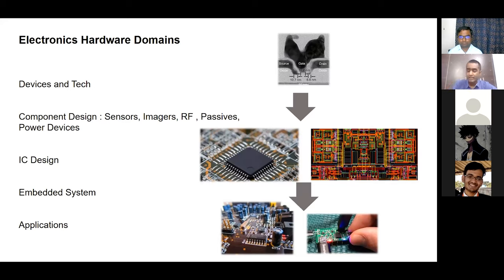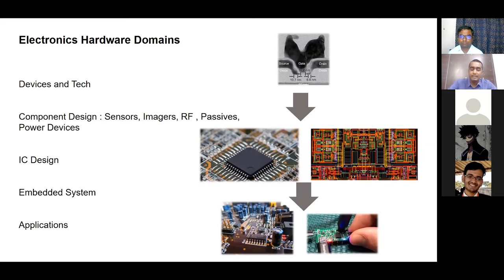An embedded system should have a processor for processing data, a sensor for acquiring data, and memory for storing data. There is a complete domain dealing with designing and programming these embedded systems so that they can perform a desired function. Whatever applications we have — mobile phones, computers, or other electronic gadgets — behind each there is this kind of embedded system with a PCB having all the electronic components.